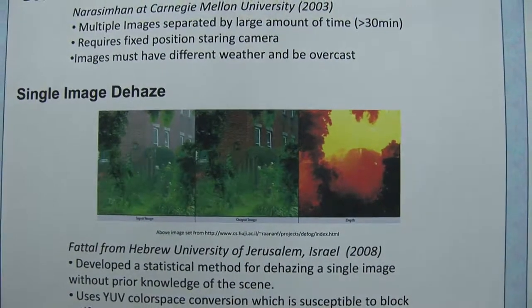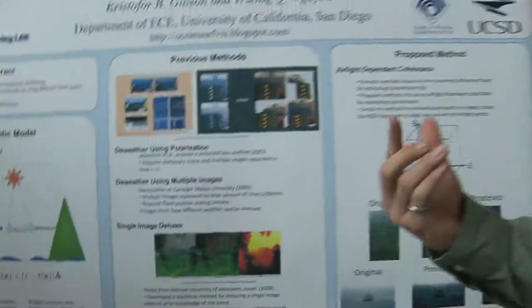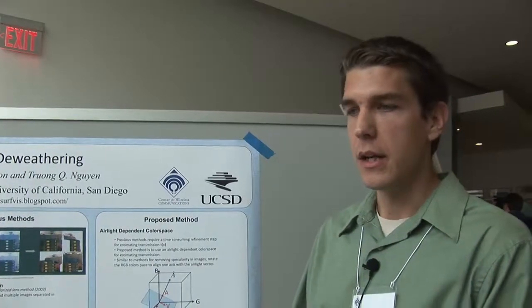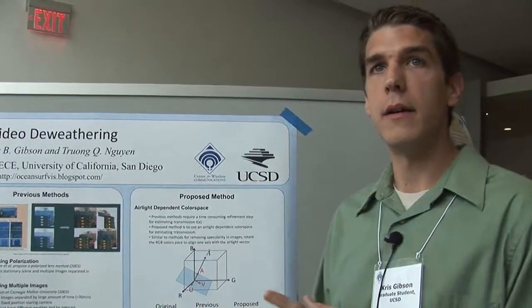My idea is to implement this in video because current methods take a long time to process. The proposed idea is to use a different color space — you rotate your RGB color cube in line with the common color in the haze or fog. It could be like smoke, which has more of a reddish hue, or fog, which is kind of gray. In video, you remove everything and get a bright contrast image.